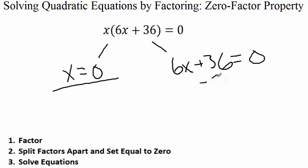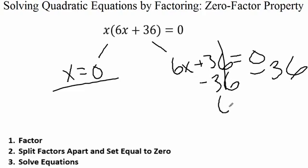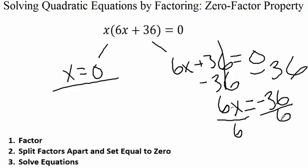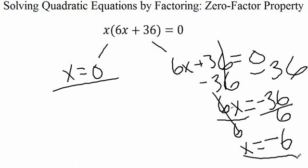Moving to the right-hand side: 6x plus 36 equals zero. First, subtract 36 from both sides — 36 minus 36 cancels, leaving 6x equals negative 36. Then divide both sides by 6 — the coefficient cancels on the left, leaving x equals negative 36 divided by 6. A negative divided by a positive is negative, and 36 divided by 6 is 6. So x equals negative 6. Our solutions are negative 6 and zero.